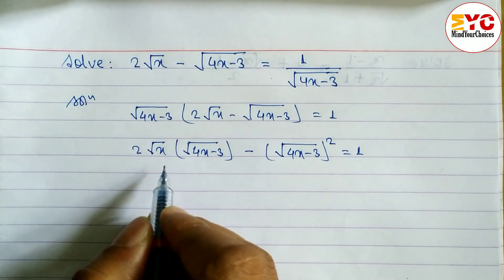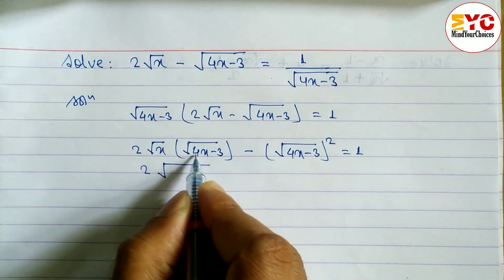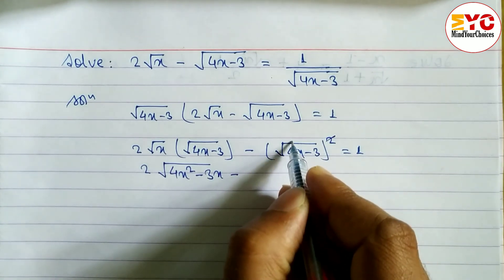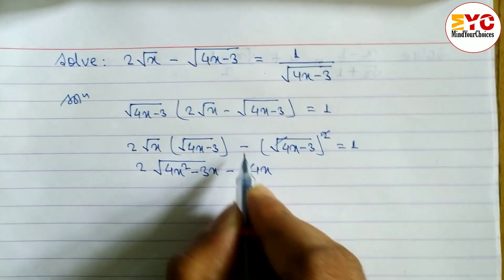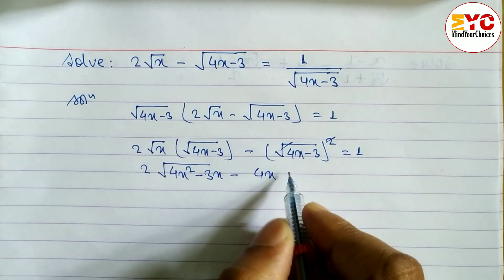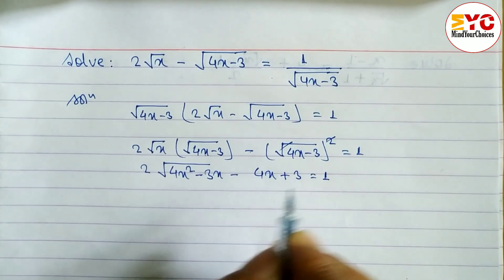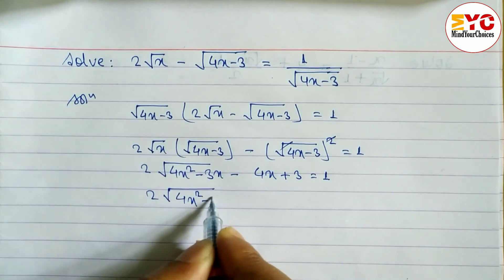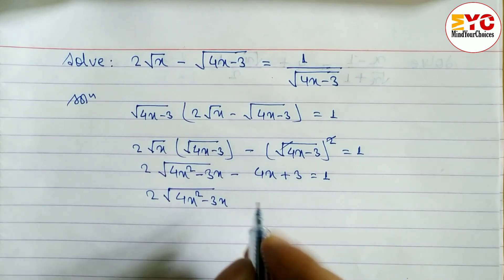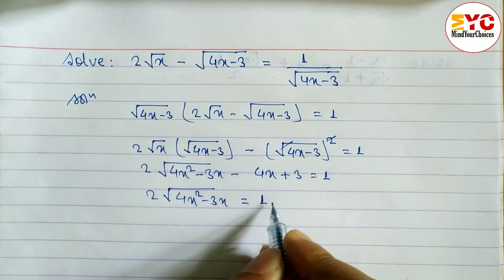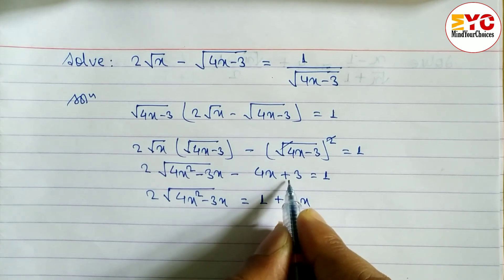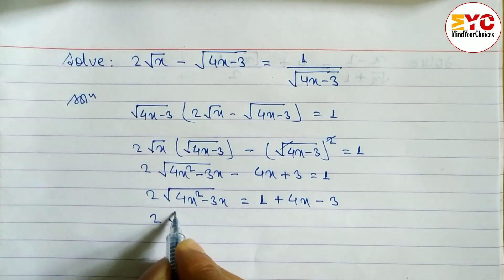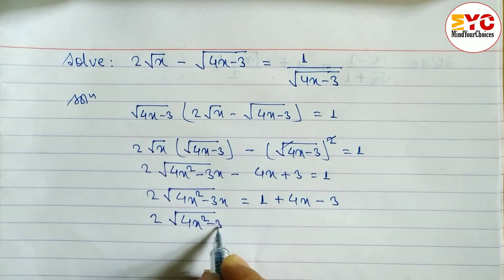We have to multiply inside the root, so we can write: 2 root under (4x into x), which gives us root under (4x squared minus 3x). The square root cancels, and we get 4x. This minus and this minus become plus, so we can write plus 3 is equal to 1. After this, both terms — 2 root under (4x squared minus 3x) — we have to take to the right side. So we write 1 minus 4x, which becomes plus 4x, and we change the sign: plus 3 becomes minus 3.